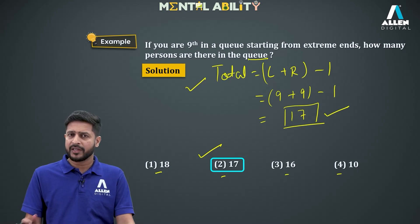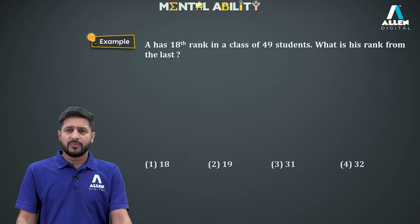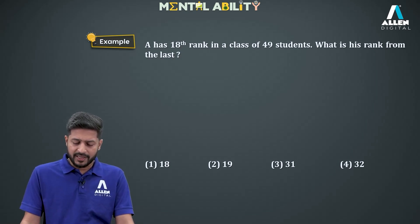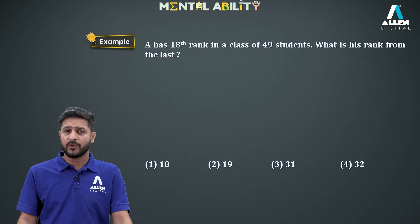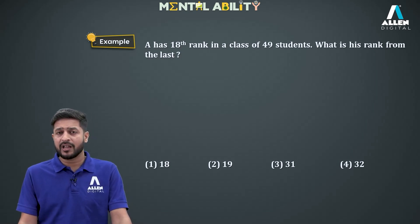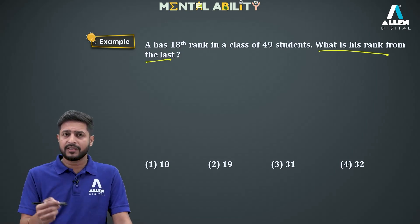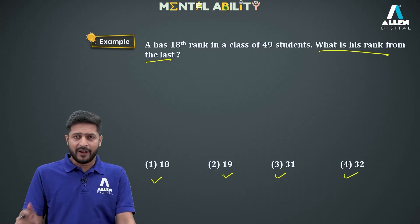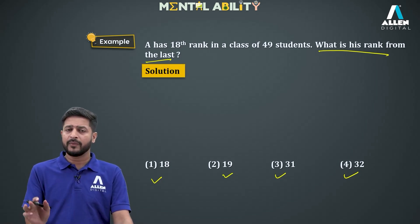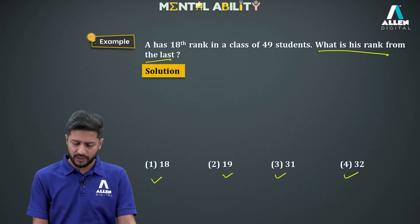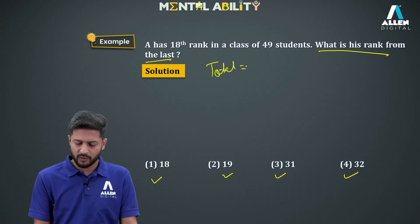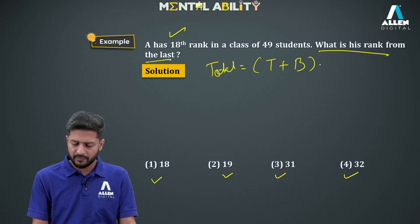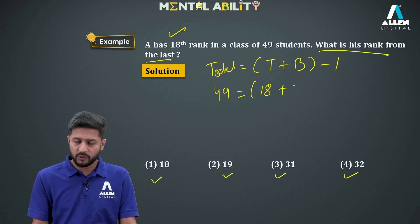Moving to Example 2: A has 18th rank in a class of 49 students. What is his rank from the last? Using the formula with top and bottom instead of left and right — Total = Top + Bottom − 1. Total persons is 49, rank from the top is 18, and we need to find the rank from the bottom.